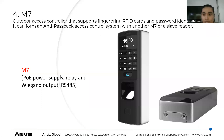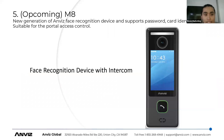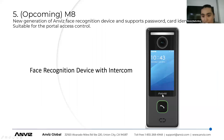Besides these models, there is an upcoming model, the M8, which will be available in the second half of this year. As we can see in the picture, this model has a camera for face recognition. It also has an intercom button to speak to the person. This device supports face recognition, card, and password identification, and will be available soon in the second half of the year.